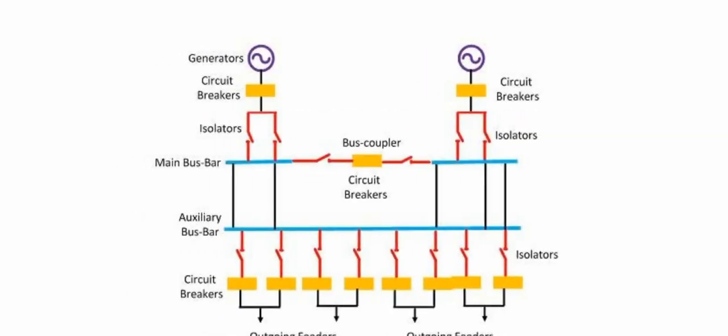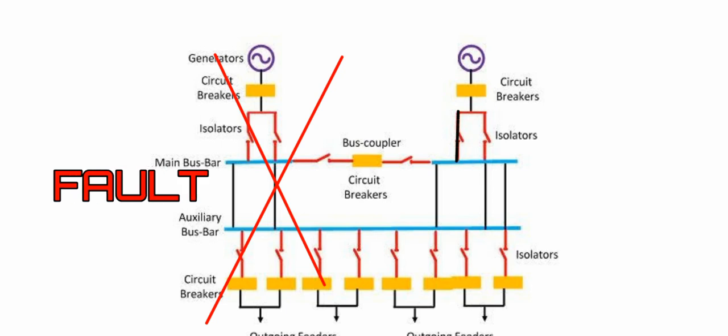This is double bus bar with sectionalization. Let's see this image. On the left side is the fault and the right side is the working bus bar. We have to replace the main bus bar — we have to keep the main bus bar going, but we have to save it. We have to remove the faulted section through sectionalization and then close the second section.